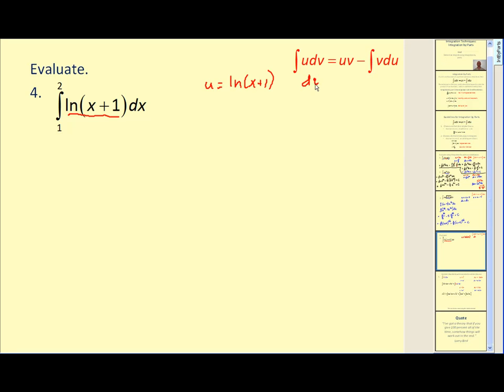Therefore, du, remember, is equal to one over u times u prime. There's one or one over u. U prime, though, would be equal to one, so we have one over x plus one dx. That leaves dv equal to dx. Therefore, v, the integral of one dx would be x. Let's go ahead and apply our integration by parts formula. Again, we have u times v minus the integral of v du.